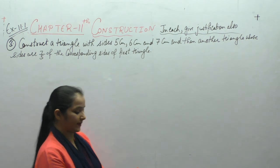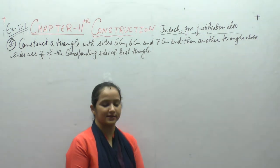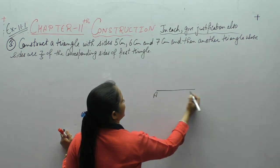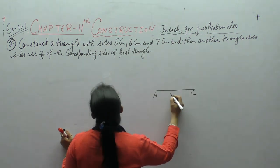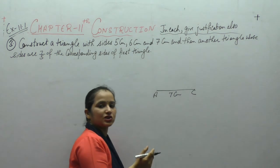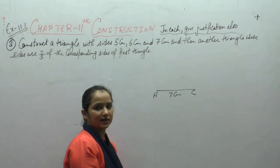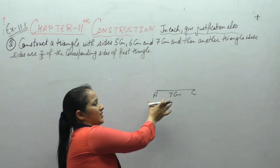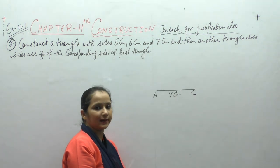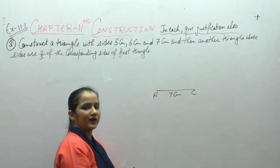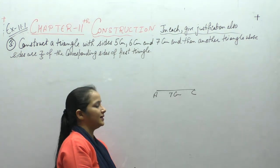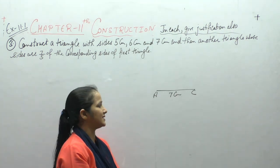सबसे पहले हमें sides given हैं। Draw करेंगे AC — draw a line segment AC of length 7 cm. AC is equal to 7 cm.